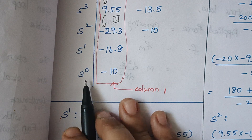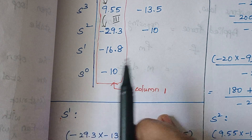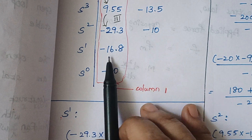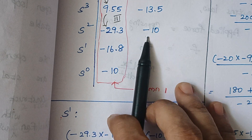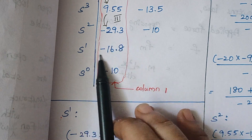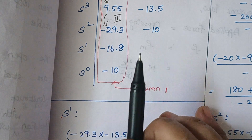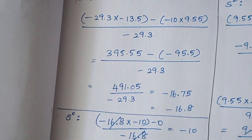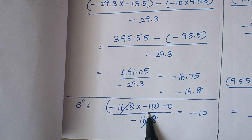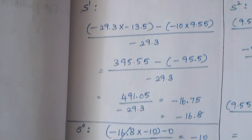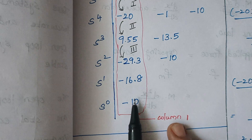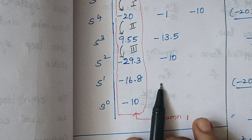Finally, for S^0: (−16.8 × (−10) − 0 × (−29.3)) / (−16.8). The two terms cancel appropriately and the final answer is −10. There are no second elements for the S^1 or S^0 rows.